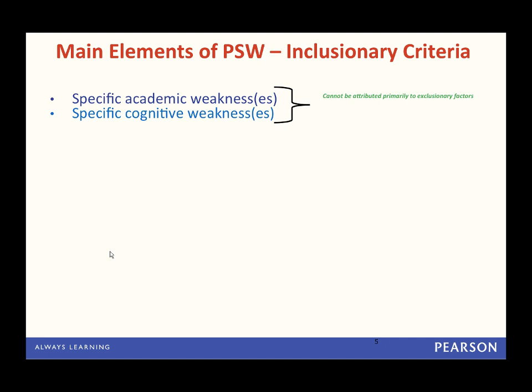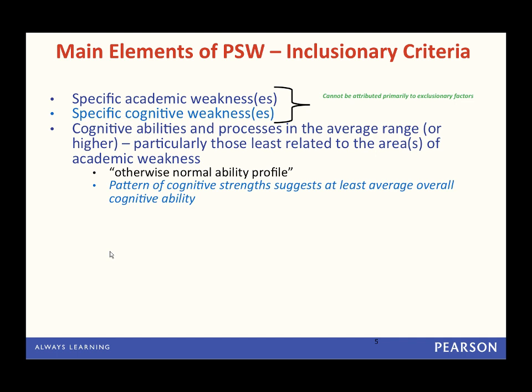Neither the academic nor the cognitive weakness can be primarily explained by an exclusionary factor. The cognitive abilities and processes being assessed are in the average range or higher. Generally, those that are least related to the areas of academic weakness would be expected to be at least typical or average. This is the otherwise normal ability profile standard, and your pattern of cognitive strengths suggests at least average overall cognitive ability. What this really means is that we're not dealing with children who have a general learning difficulty or intellectual disability with overall depressed cognitive performance. We're talking about circumscribed cognitive weaknesses that exist in a context of otherwise average ability.